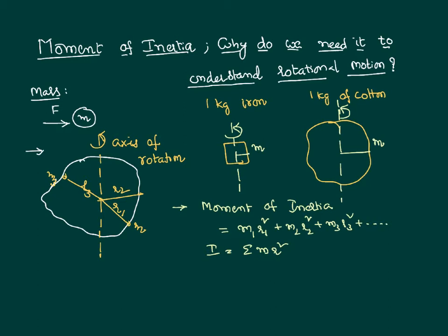Moment of inertia is similar to the mass in translatory motion — the role played by mass in translatory motion is played by moment of inertia in rotatory motion. If moment of inertia is more, it is difficult to rotate a body; if it is less, it is easy. For the cotton, the particles are farther from the axis, so moment of inertia is more, making it more difficult to rotate than iron, even though both have the same one kilogram mass.